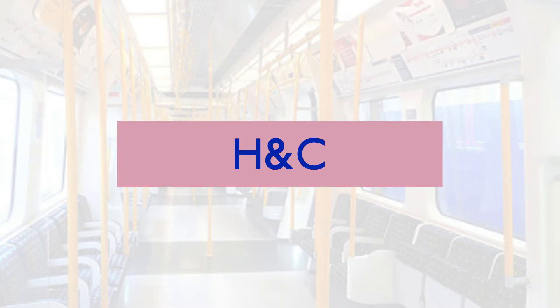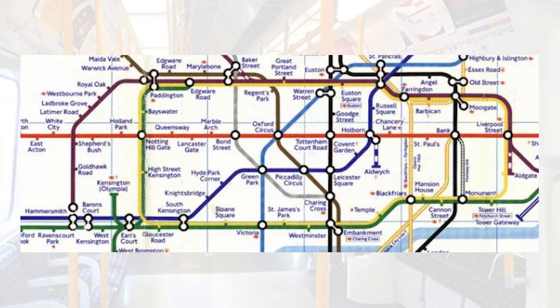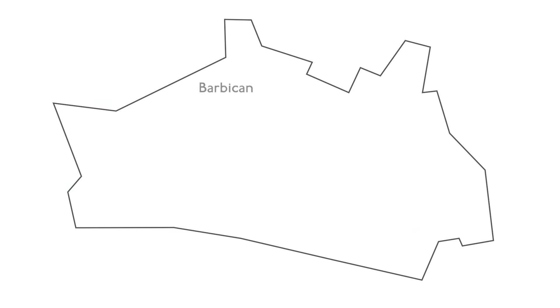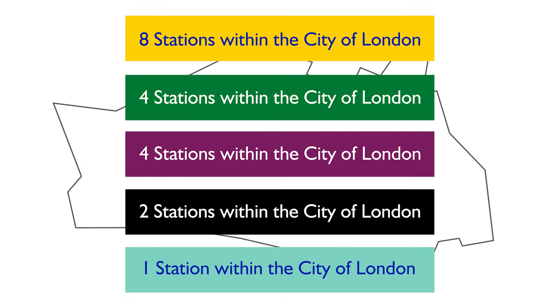Next up is the Hammersmith and City Line, which first appeared on the tube map in 1990. It had always been part of the Metropolitan Line, but London Transport gave it its own identity with a name and colour in this year. It is so called simply because it runs between Hammersmith through to the City of London, although amusingly only three of its stations actually fall within the City of London — the Circle, District and Metropolitan Line all have more.